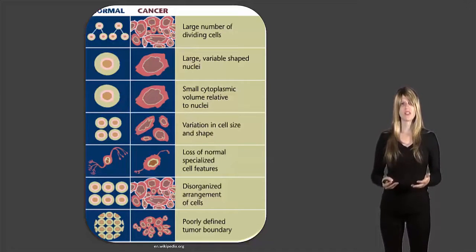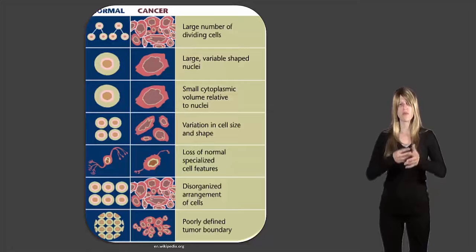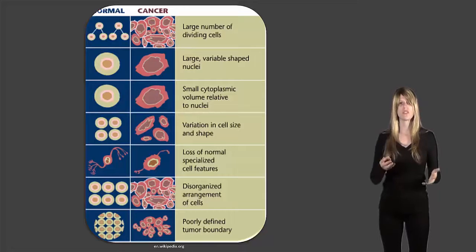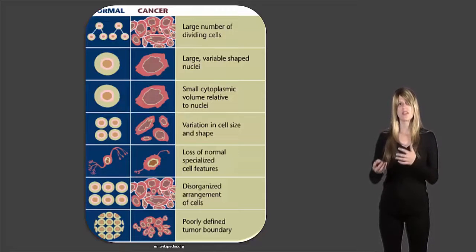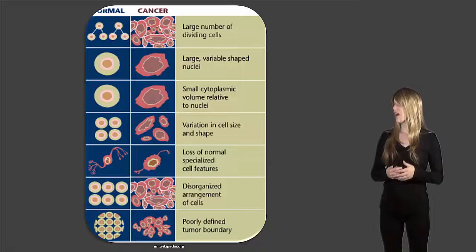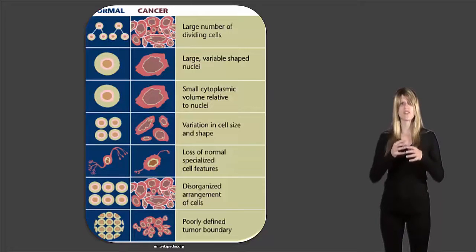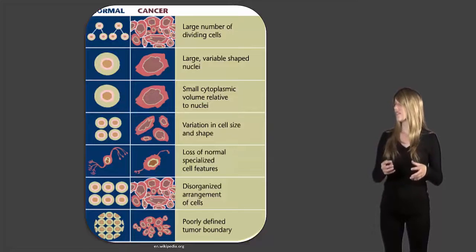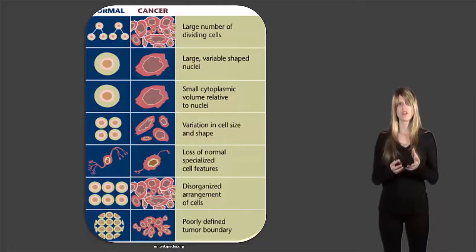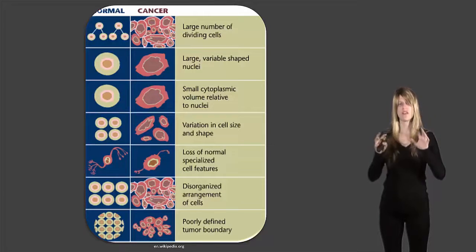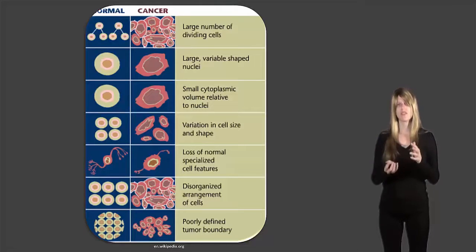When we talk about specialized cells, they may have certain types of organelles or projections from the cell that allow it to do its job. Cancer cells may lose those organelles or lose their specialized shapes and functions because they're going through the cell cycle so rapidly. These cells also become disorganized — they're not arranged properly — and the boundary of the tumor can be poorly defined, so they may be a little bit all over the place. That's how a doctor would look at cells and determine if they're regular or cancer cells.